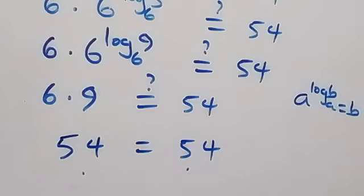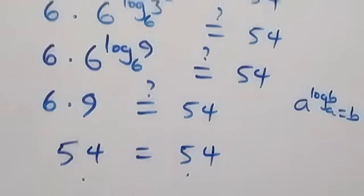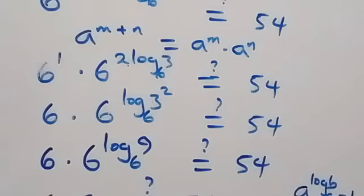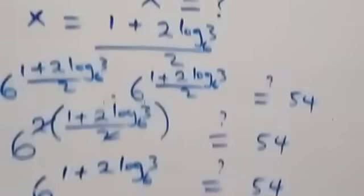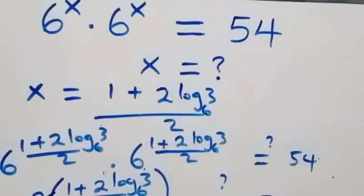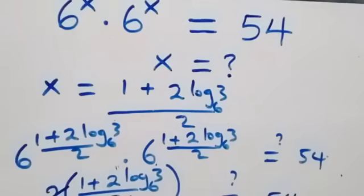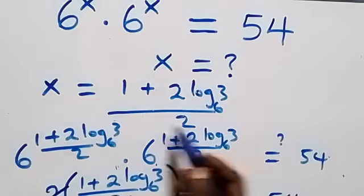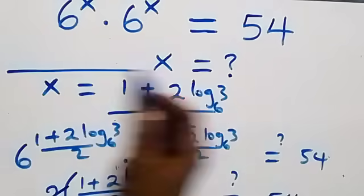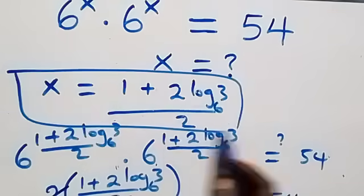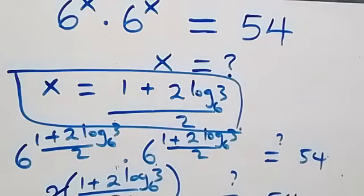The left-hand side equals the right-hand side. We conclude that x equals (1 plus 2 log₆3) over 2 satisfies the given problem. Thank you for watching — don't forget to subscribe for more videos, turn on the notification bell, share this video, give it a thumbs up, put your comment, and see you next class. Bye for now.